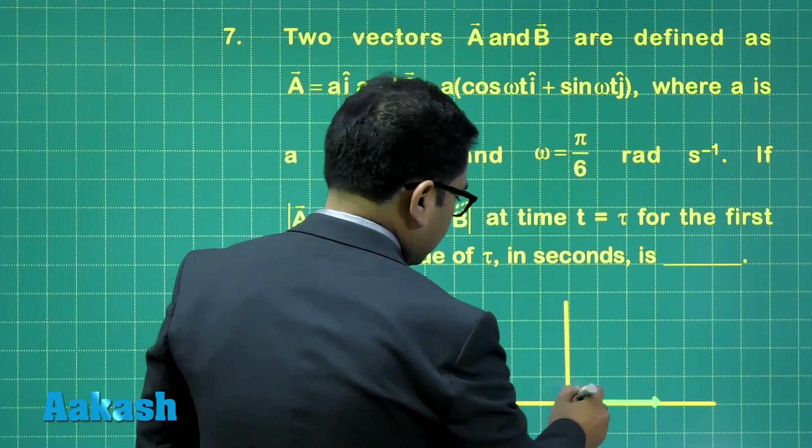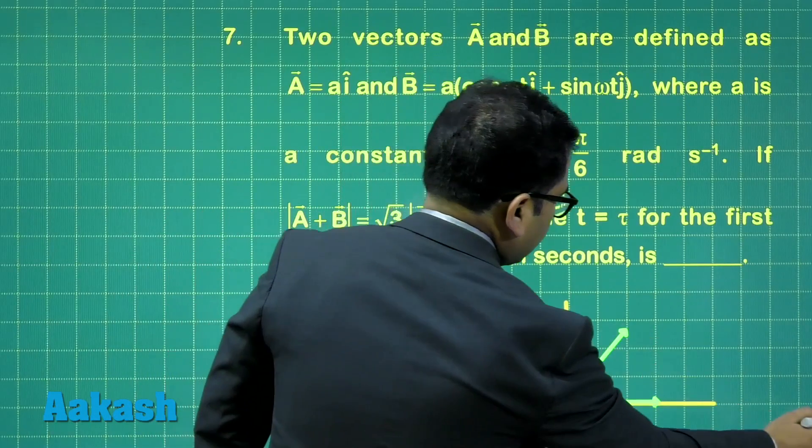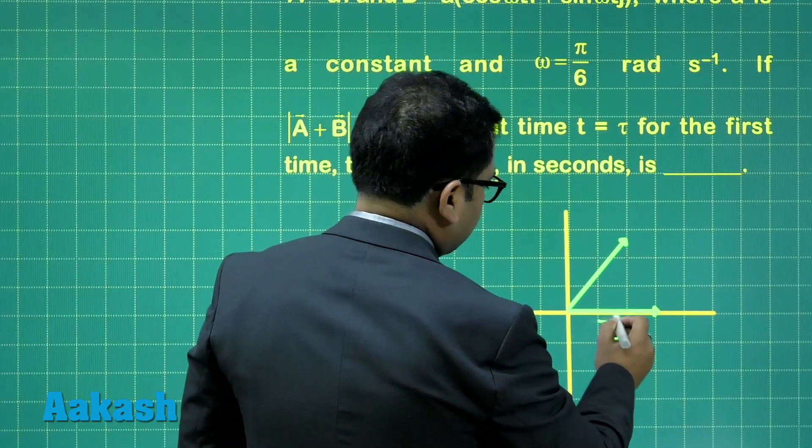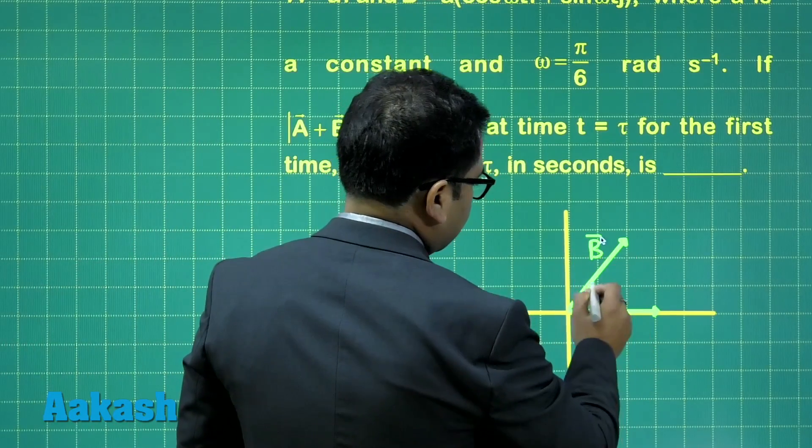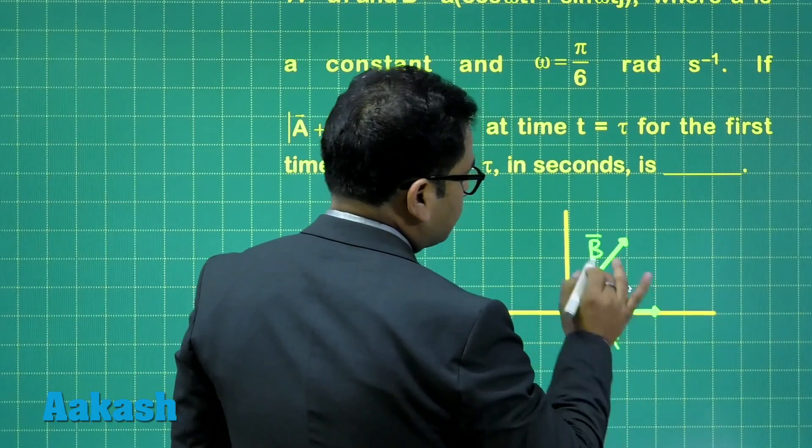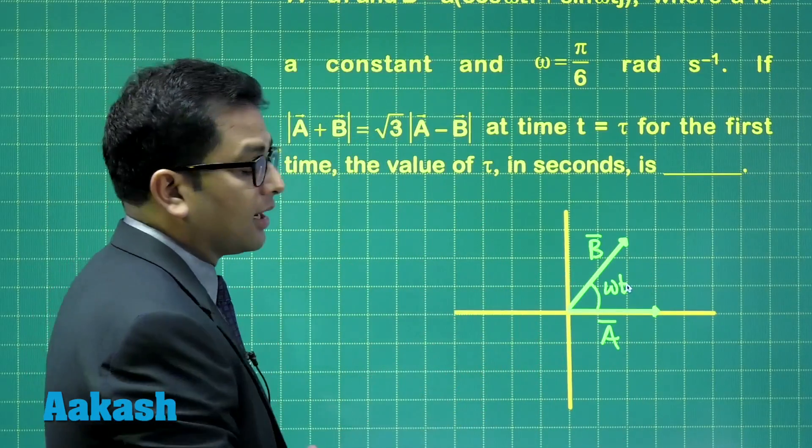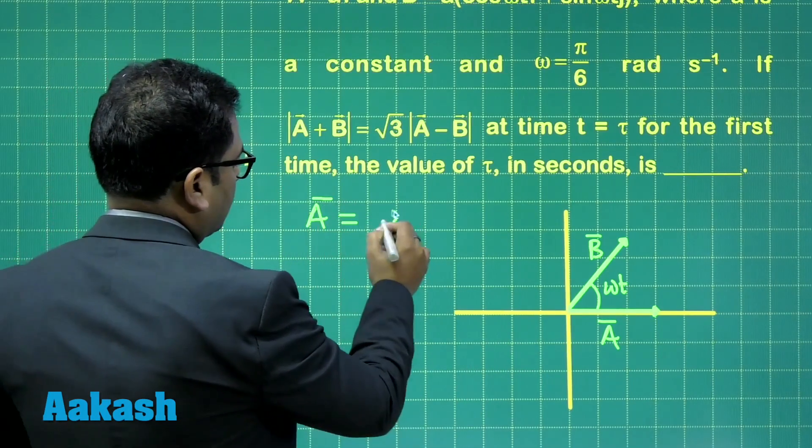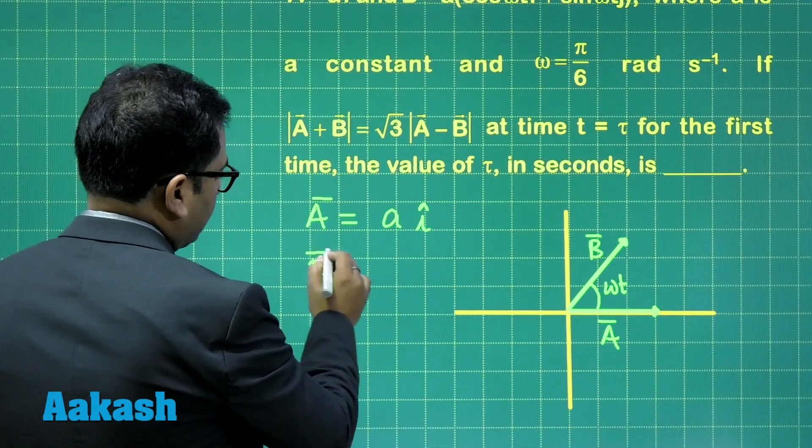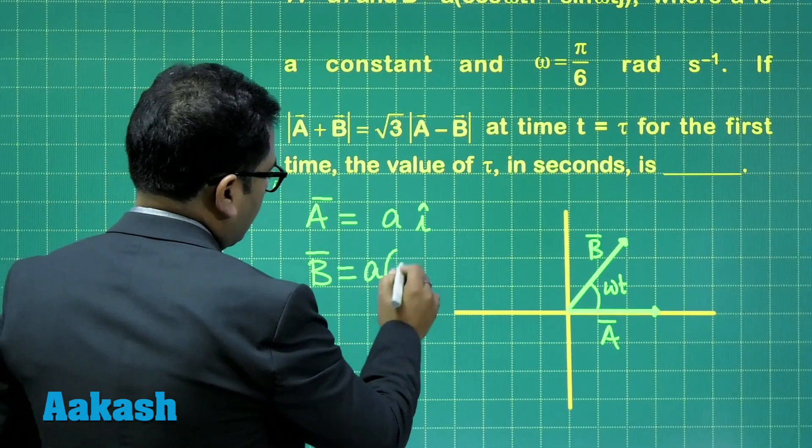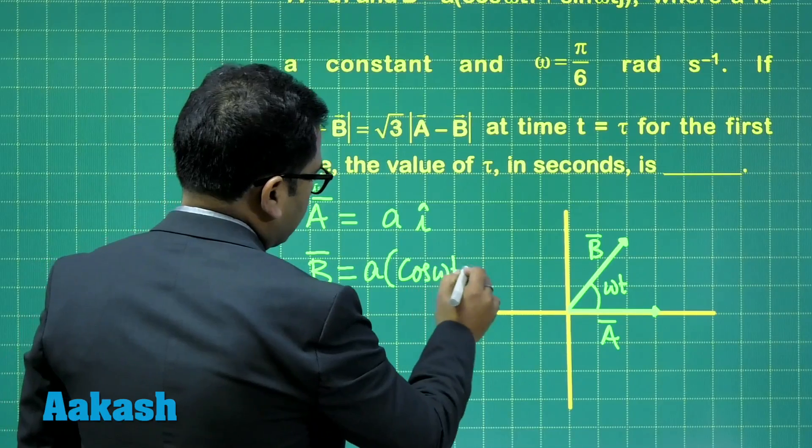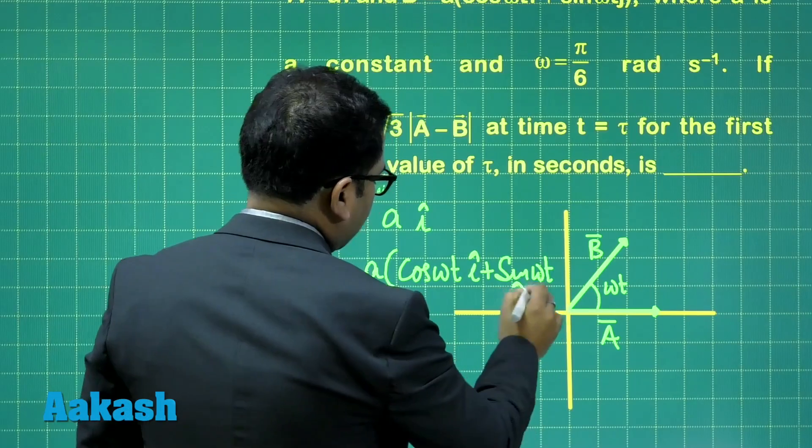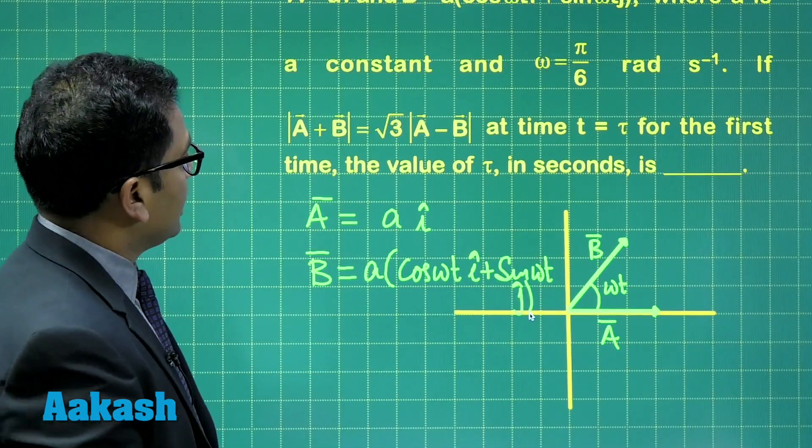B vector is at angle ωt from the x-axis. The magnitude of both vectors is A. A vector is straightforwardly A î, and B vector is A cos ωt î + A sin ωt ĵ, so the magnitude is effectively A from √(A²cos²ωt + A²sin²ωt) = A.